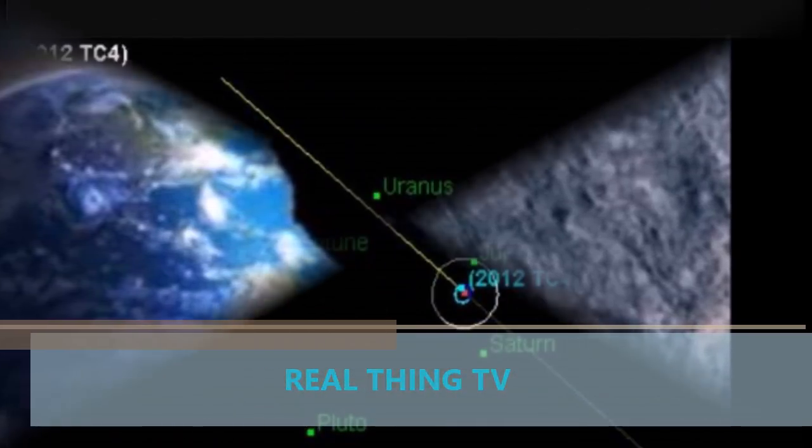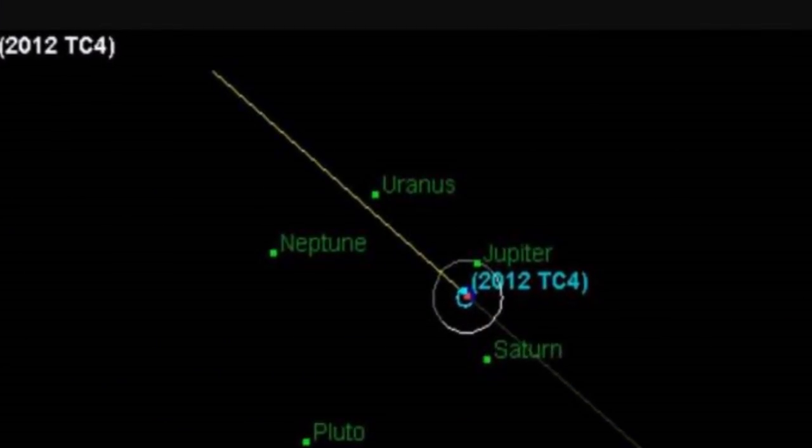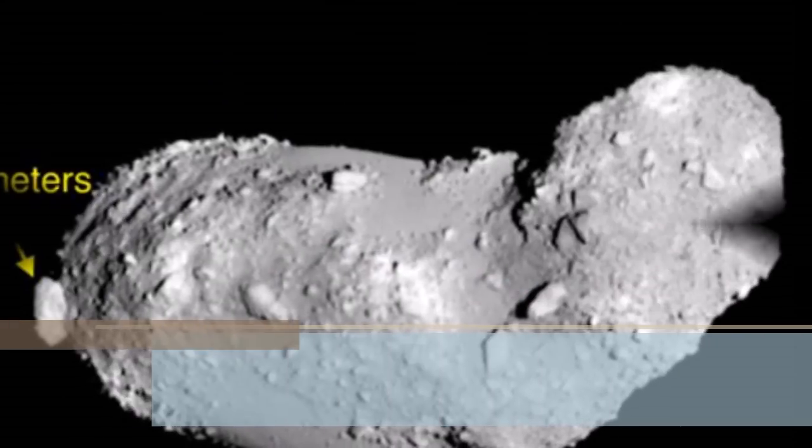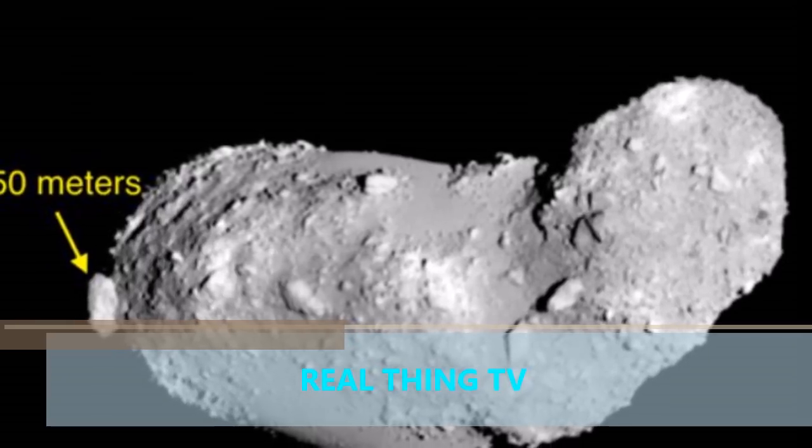On October 12, New Yorkers will be closer to the object 2012 TC4 than to Tokyo. It will come thousands of times closer to Earth than feared Francesca Mega Asteroid.